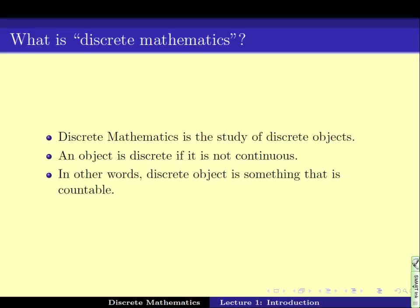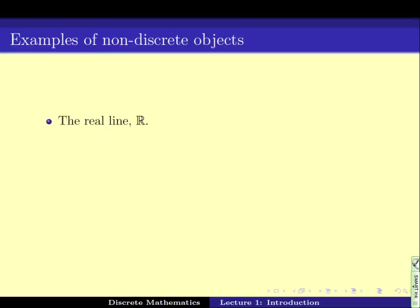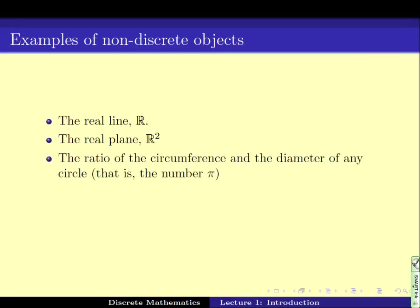So, let's see some examples of objects that are not discrete. One such example is the real line. Real line meaning all the numbers starting from minus infinity to plus infinity. The set of real numbers form a continuous spectrum and hence it is not a discrete object. Similarly, a real plane, the plane of R^2 is a continuous object.